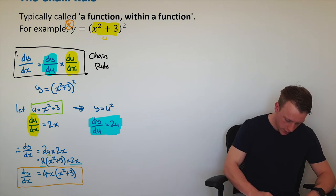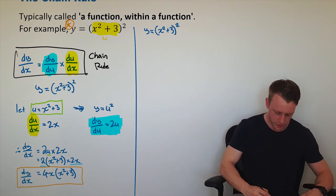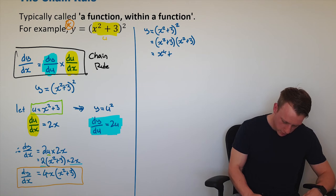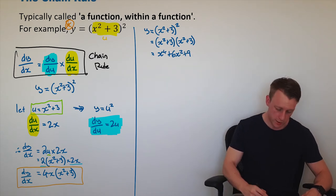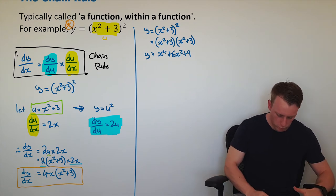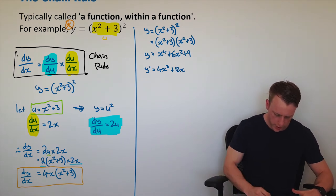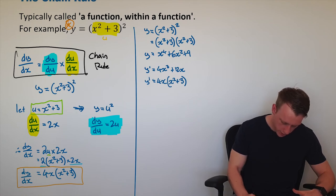We can do a little side work to verify. We have y equals (x squared plus 3) squared. We can just expand that: (x squared plus 3)(x squared plus 3) gives x to the power of 4 plus 6x squared plus 9. Differentiating using the power rule gives y prime equals 4x cubed plus 12x. Factorizing, we can pull out a common factor of 4x to get 4x(x squared plus 3). We notice we've got the same result — the chain rule gives us exactly the same answer.